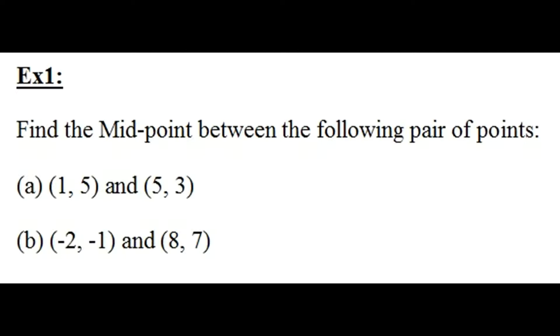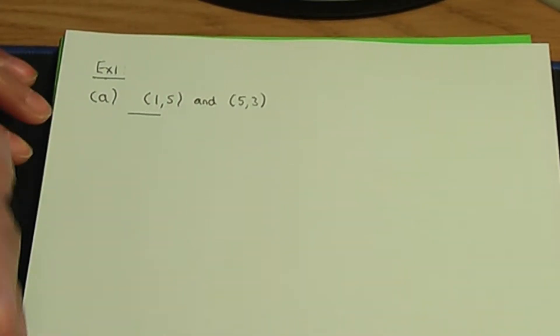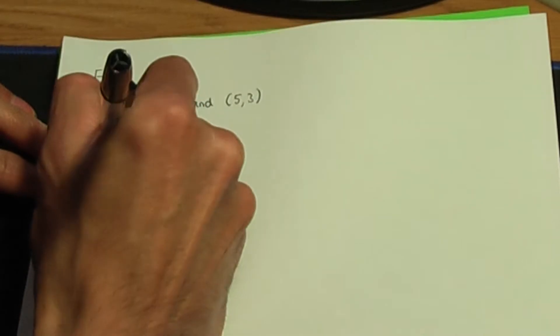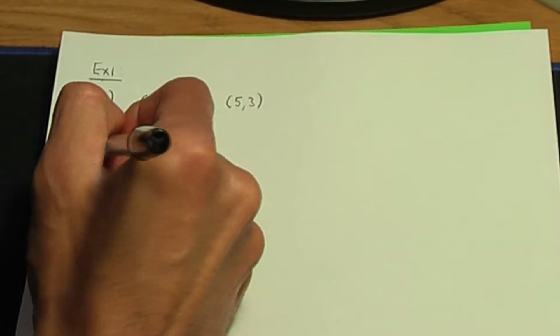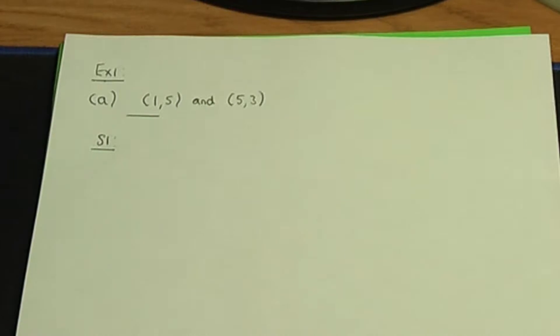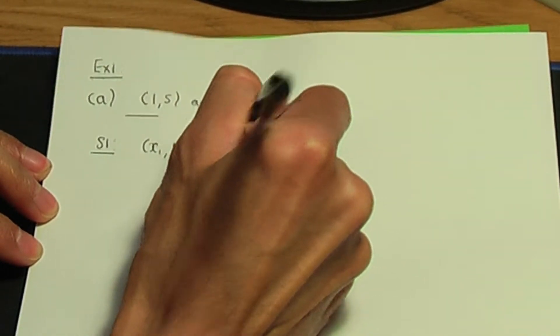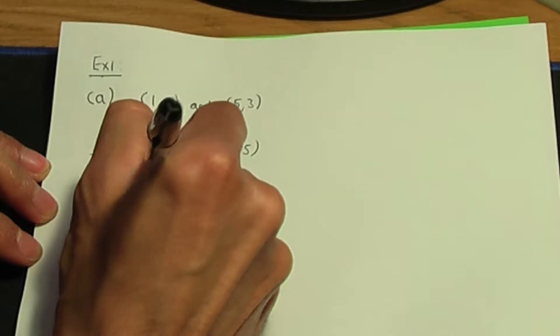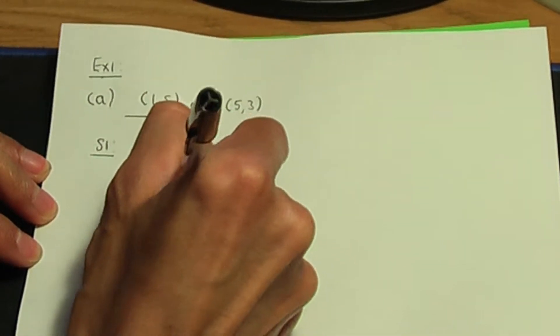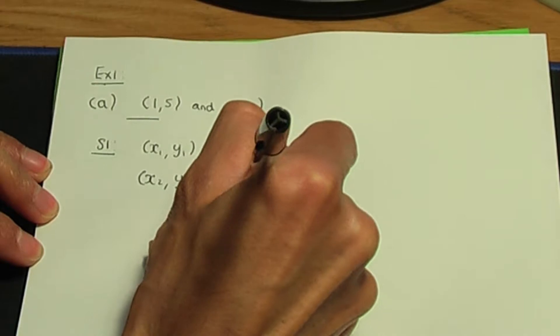Example one: find the midpoint between each of the following pair of points. In part A, the points are (1, 5) and (5, 3). In step one, let me name the coordinates. I'll call the first coordinate x1, y1. So x1, y1 is 1, 5. And the second coordinate, I'll name x2, y2, which is 5 and 3.